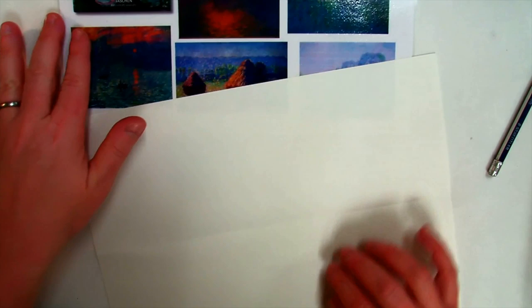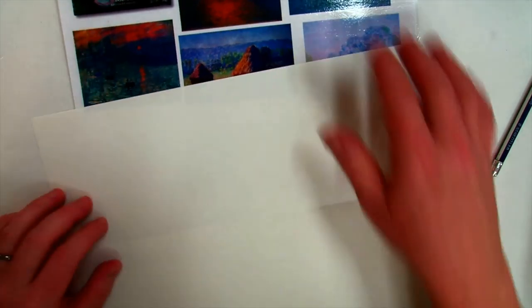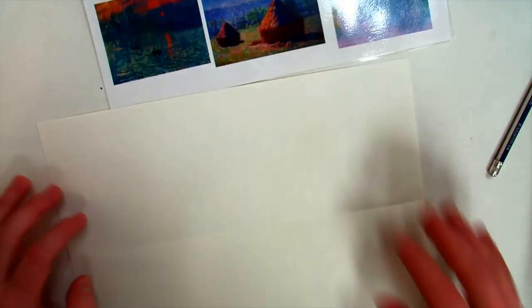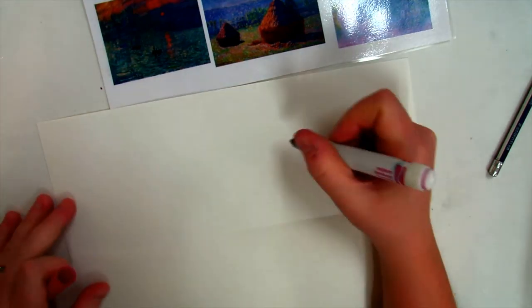And then unfold your paper. So now you know where the middle line is and you're going to be drawing your image, your landscape image, on just the top half of this paper. And I'll show you later at the end how you'll create the reflection.